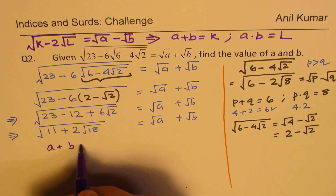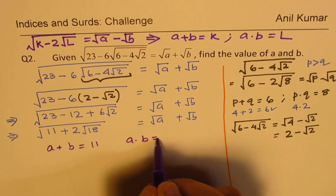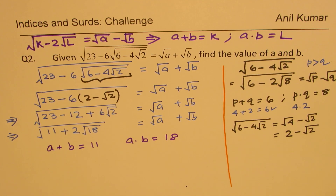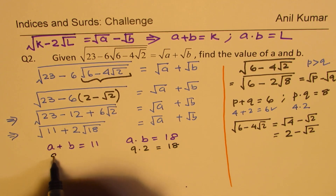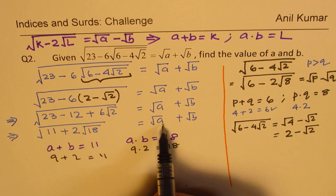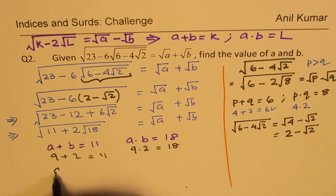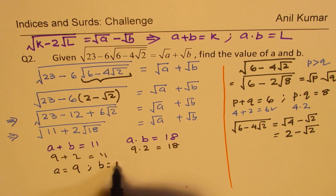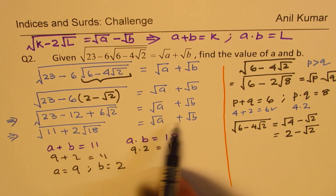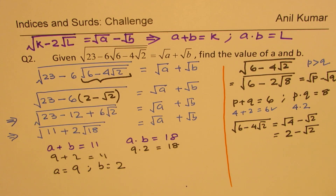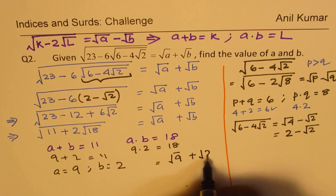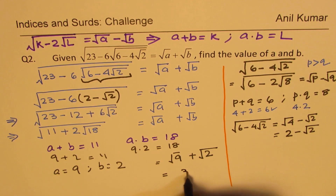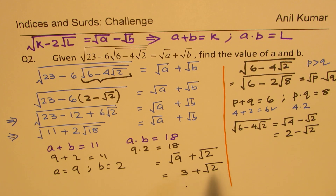Now applying the rule: A plus B should equal 11 and A times B should equal 18. The two numbers are 9 and 2. So A equals 9 and B equals 2. We can verify: square root of 9 plus square root of 2 equals 3 plus square root of 2, which is correct. The value of A is 9 and B is 2.